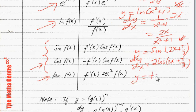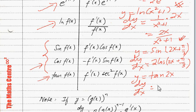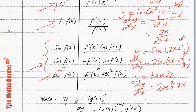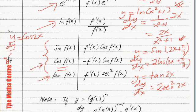Let's say I have y equals tangent 2x. You can write straight away dy/dx equals — differentiate 2x, you get 2; differentiate tangent, you get sec squared 2x. So dy/dx equals 2 sec squared 2x. Be careful: when you differentiate cos x, you get minus f'(x) sin f(x). For example, if y equals cos 2x, then dy/dx equals minus 2 sin 2x. Don't forget the negative in front.